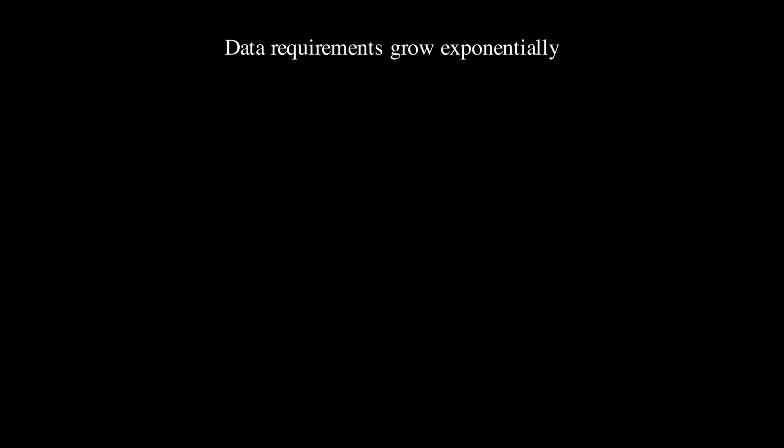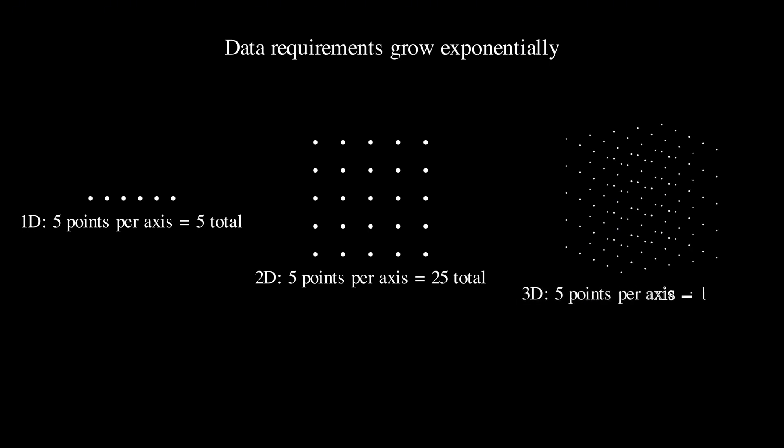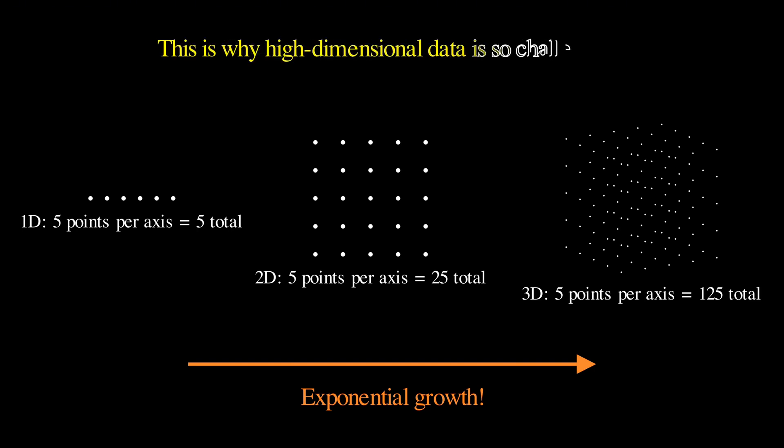For instance, if we want to sample a 1-dimensional space with 5 evenly spaced points, we need 5 samples. For a 2-dimensional space with the same density, we need 5 to the power of 2, which equals 25 samples. For a 3-dimensional space, that's 5 to the power of 3, which equals 125 samples. And basically, this is the essence of the curse of dimensionality: exponential growth in data requirements as dimensions increase.